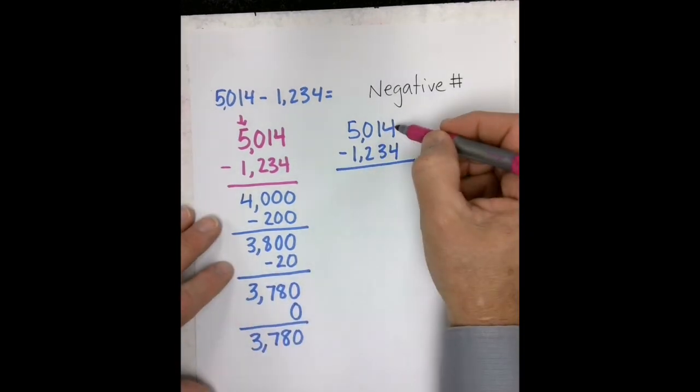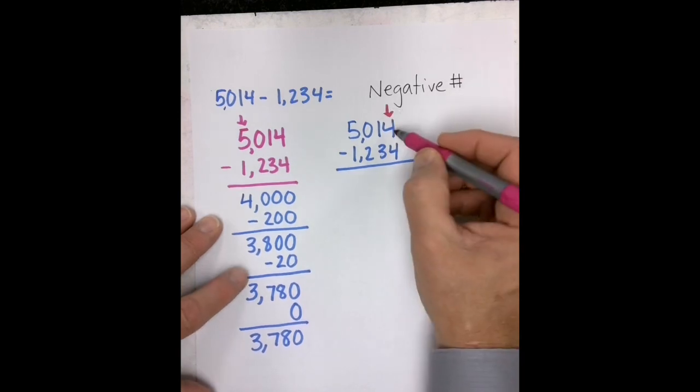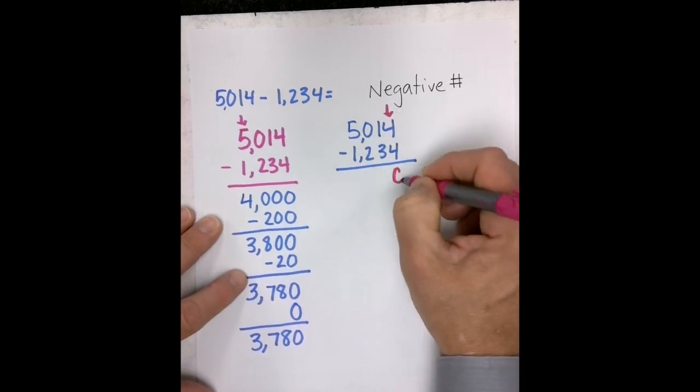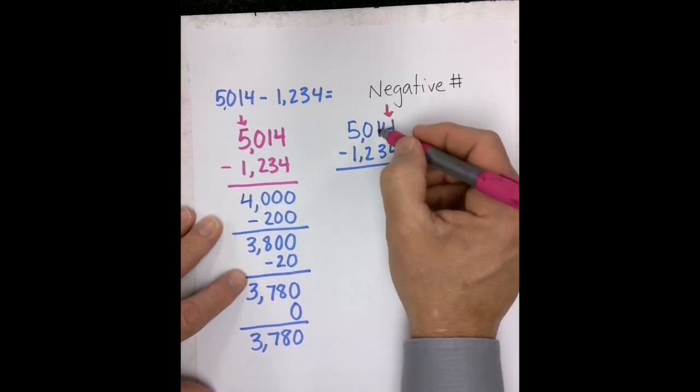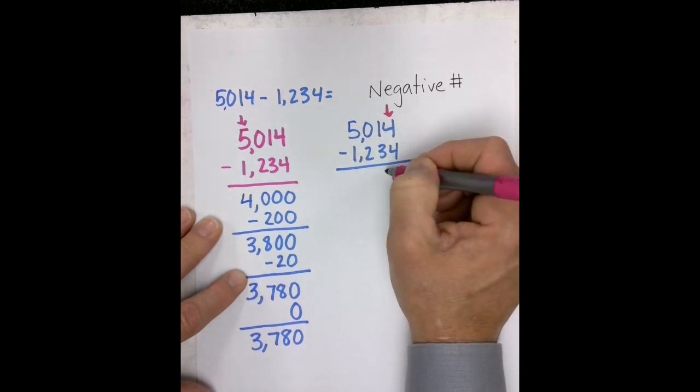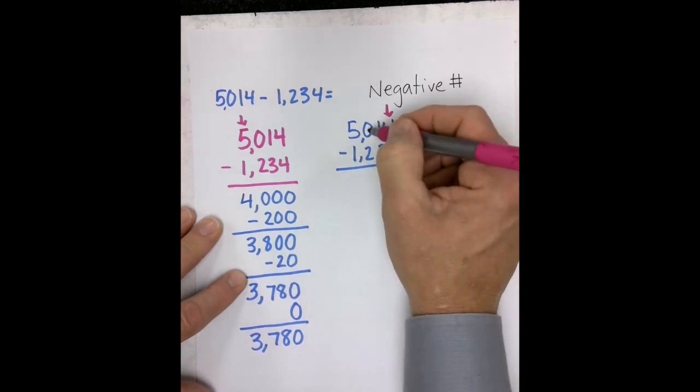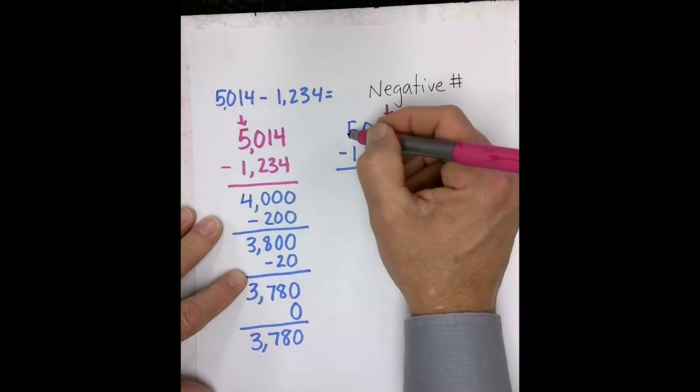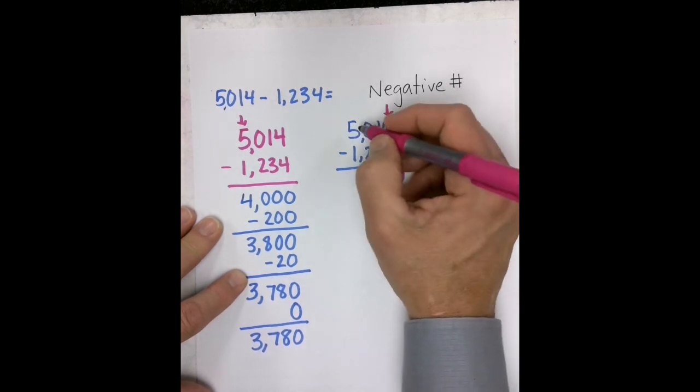In this case, we would start at the ones place. 4 minus 4 is 0. We would do 10 minus 30, which we can't do, so we have to regroup. But we can't regroup from the 0, so we have to go over to the hundreds place.